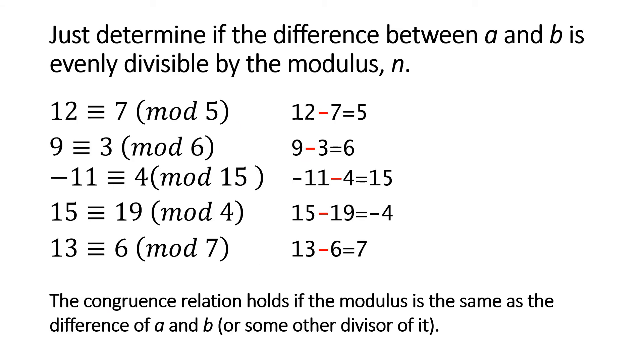We just need to determine if the difference between a and b is evenly divisible by n. A and b being the numbers on either side of the congruent sign, and n being the number in the parentheses. The fact that the modulus is in parentheses is really just a convention.